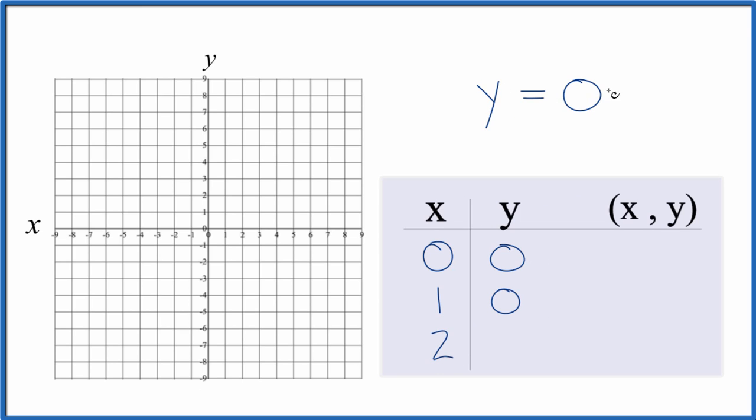x is 2. Again, there's no x, so y is still equal to 0. And you can see no matter what we put in for x, y is going to be 0.